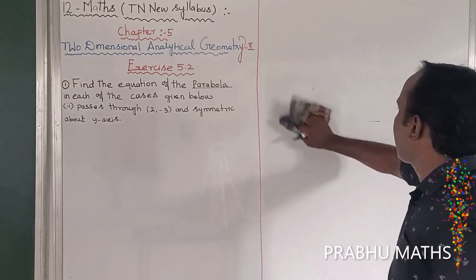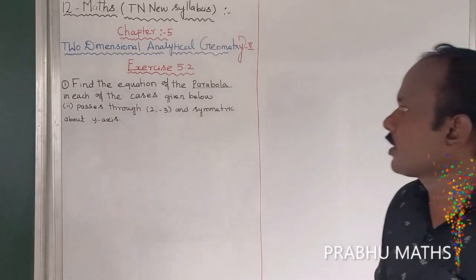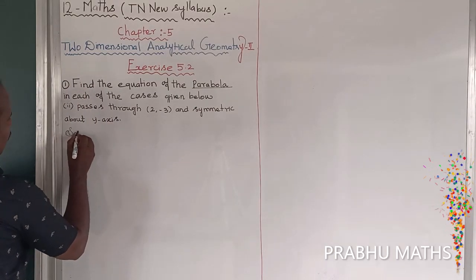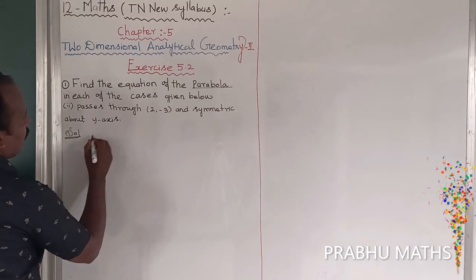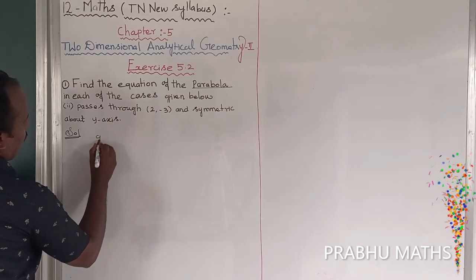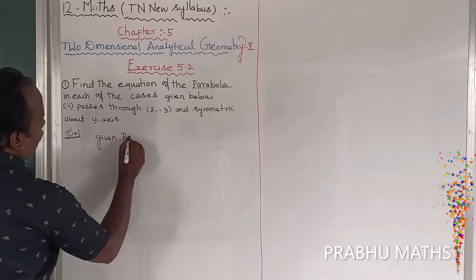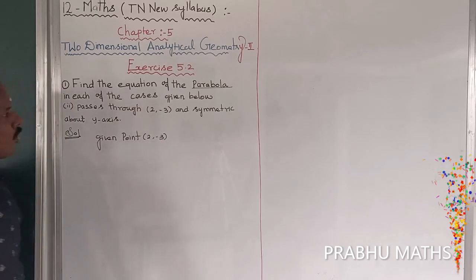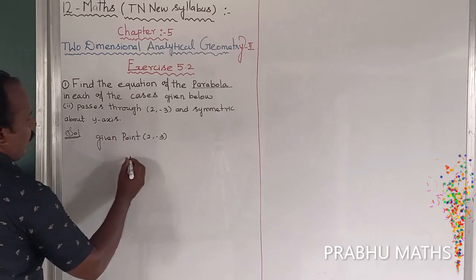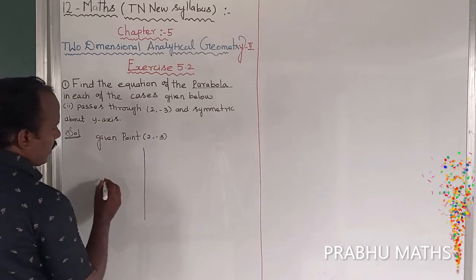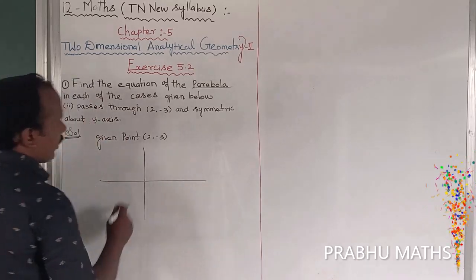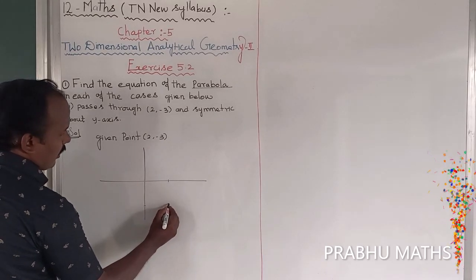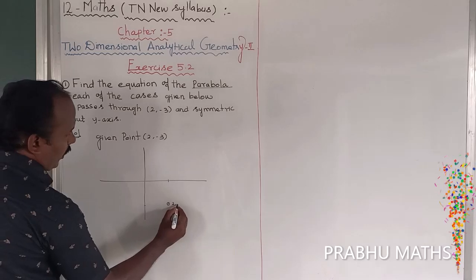So the given sum is one upward or downward open. First of all, passing through the point — the given point is (2, -3) and symmetric about the y-axis. So let us take the graph sheet. This point is (2, -3).